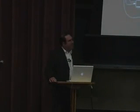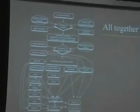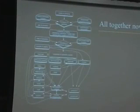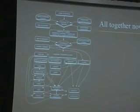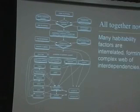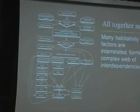This is a diagram outlining the important factors, starting from the origin of the universe at the very top to life at the very bottom, and all the things that have to go right and their interrelationships over the history of the universe. This is a shorthand summary of what we're learning today in the field of astrobiology. The lesson is that there are many habitability factors that are interrelated — they depend one on the other, forming a complex web of interdependencies.